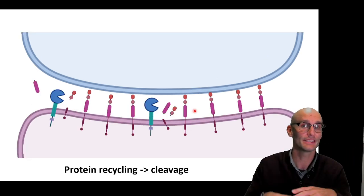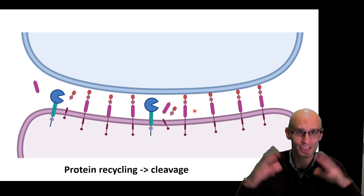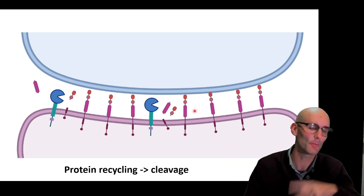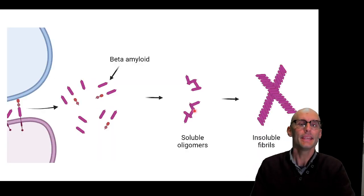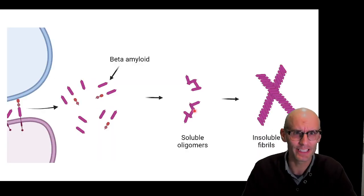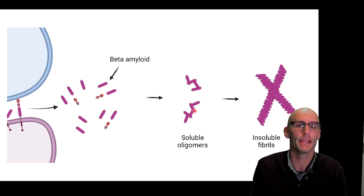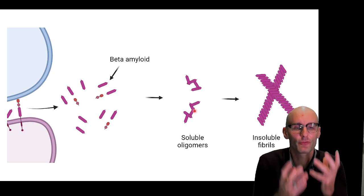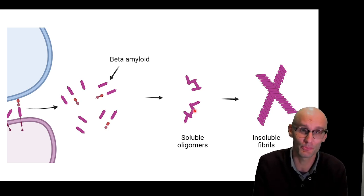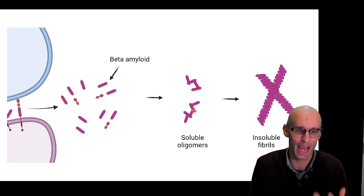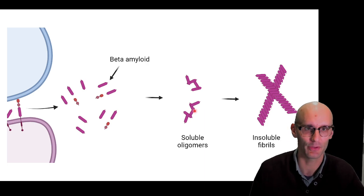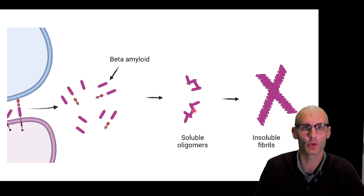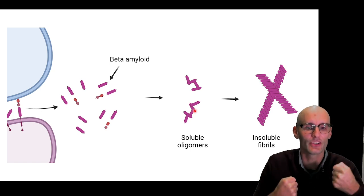Now like all proteins it's chopped, cleaved, cleared, and recycled — it's chopped up into fragments to help that recycling process. Now in Alzheimer's disease, for whatever reason, we end up with excessive fragments of this amyloid precursor protein that we call beta amyloid. This is all in the previous video, so I go into it in more detail there.